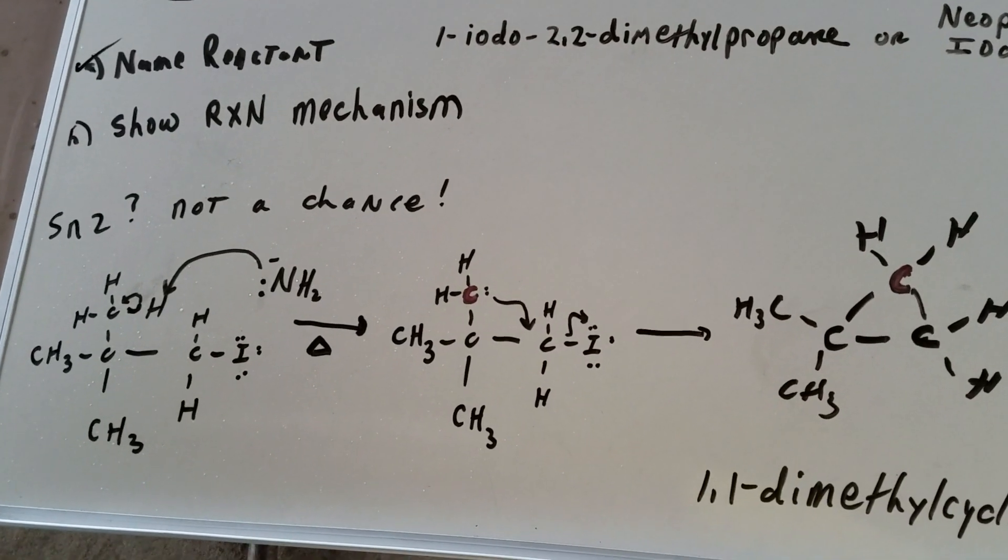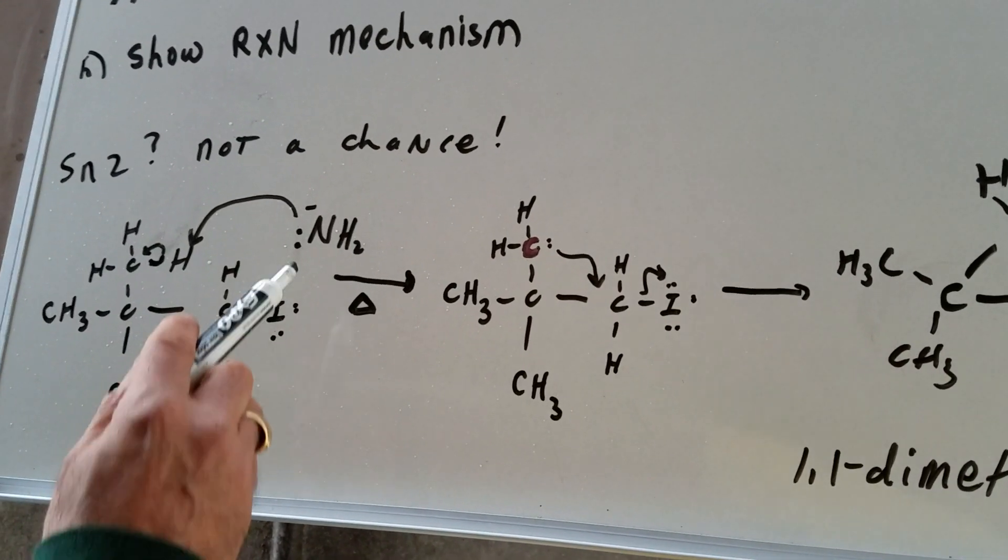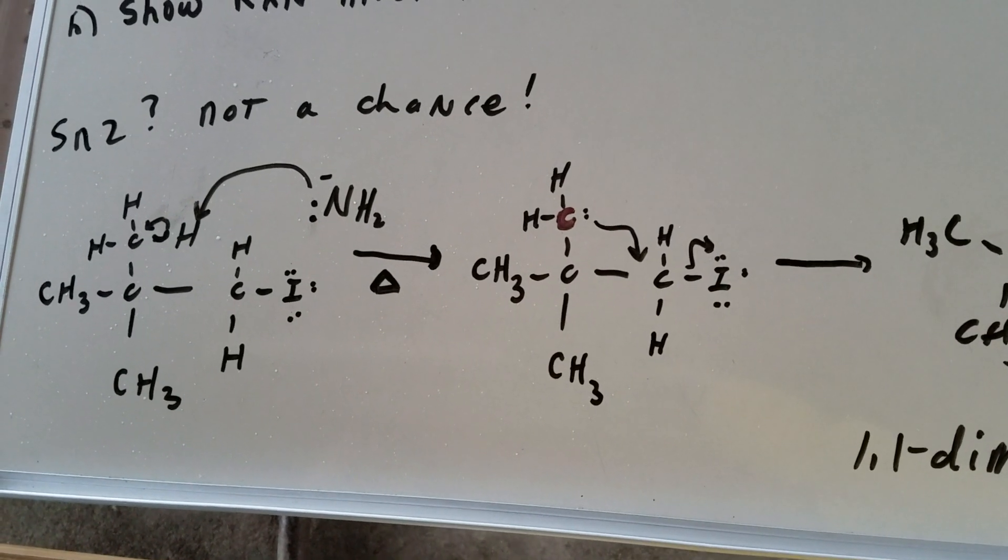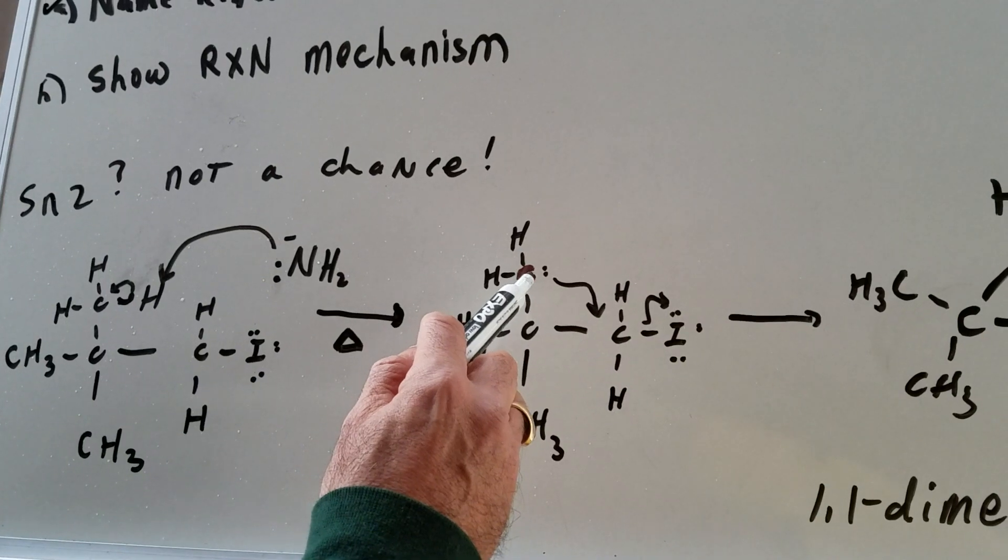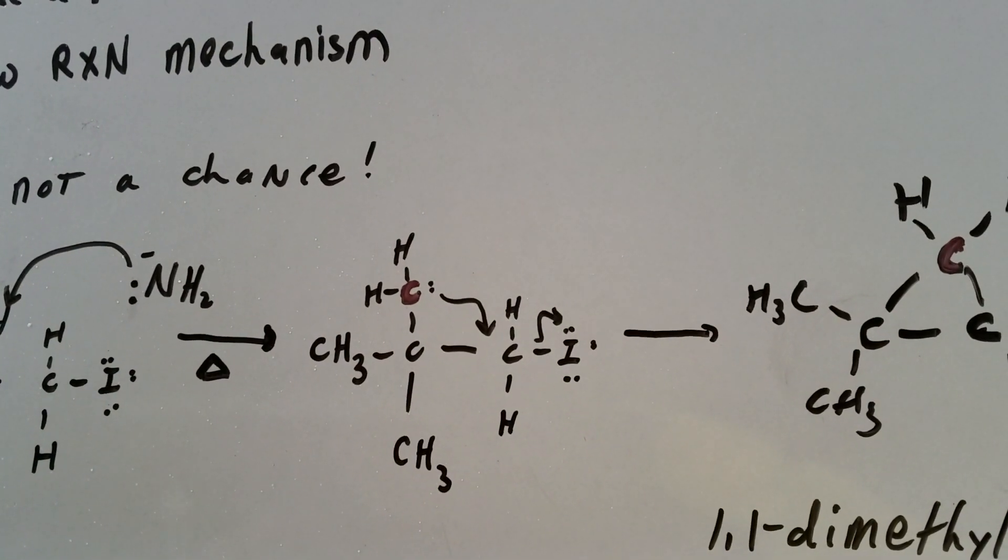And NH2 minus is very strong, even strong enough to remove an H off a methyl group. So as you can see in my first step, I removed an H off of the methyl group. And this carbon I now labeled for you so no one gets lost in red. This carbon here is now a carbanion.